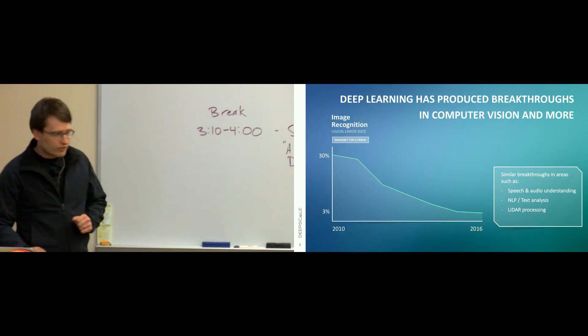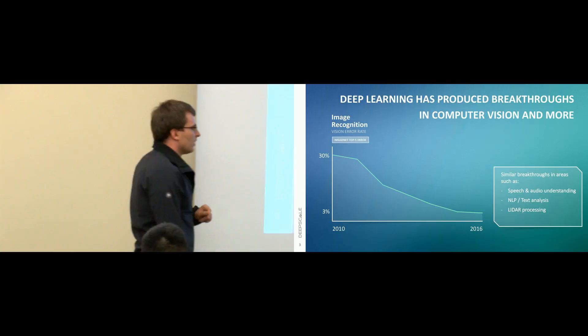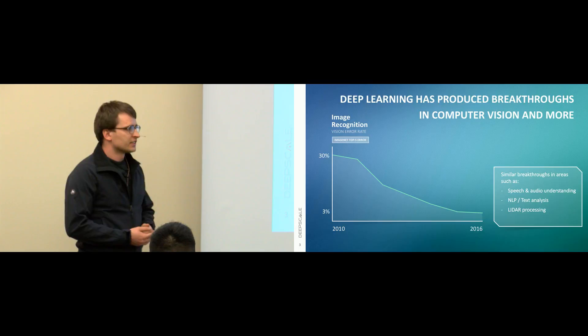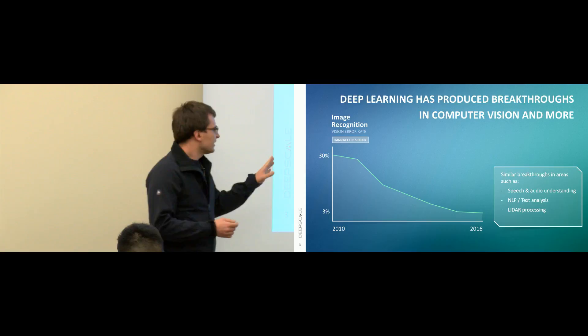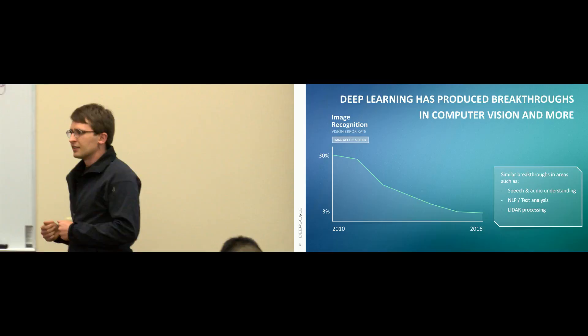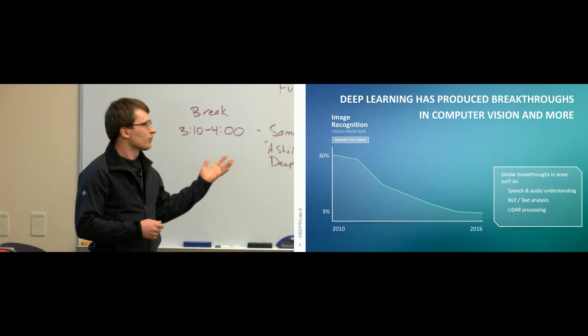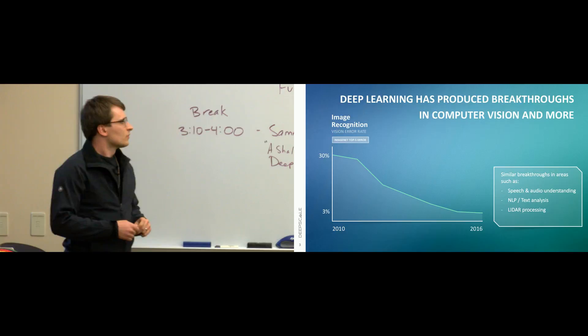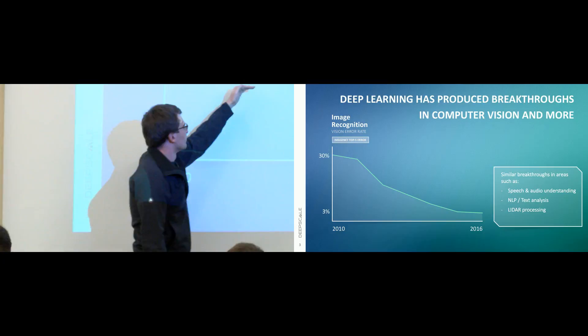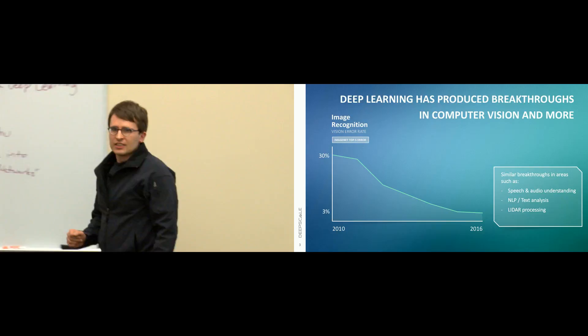These are results from ImageNet, a popular computer vision challenge. The goal is to classify not just cats and dogs but many things in pictures. From 2010 to 2016, there's been an improvement going from about 30% error rate down to just 3%. Around 2012, there was a big jump from 30% error to 15% — that's when people started getting really serious about using deep neural nets.